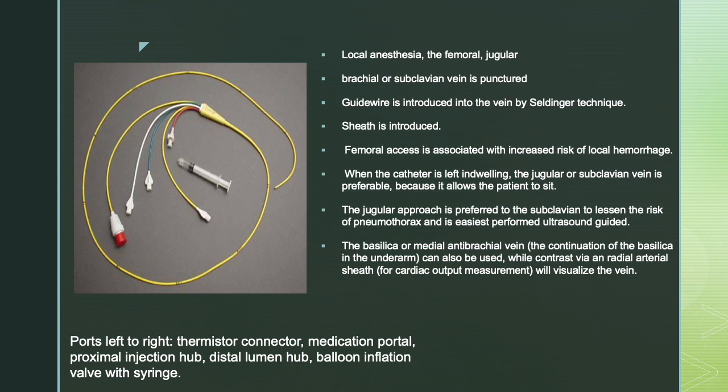The jugular or subclavian vein is preferable because the patient can remain mobile and it can serve as a central line. The jugular approach is preferred over subclavian because there is lesser risk of pneumothorax, it is easily performed, and can be done under sono guidance. Looking at the ports from left to right: there is a port for the thermistor, a connection for pressures, a medication portal, a proximal injection hub, a distal injection hub, a balloon inflation valve, and a syringe.